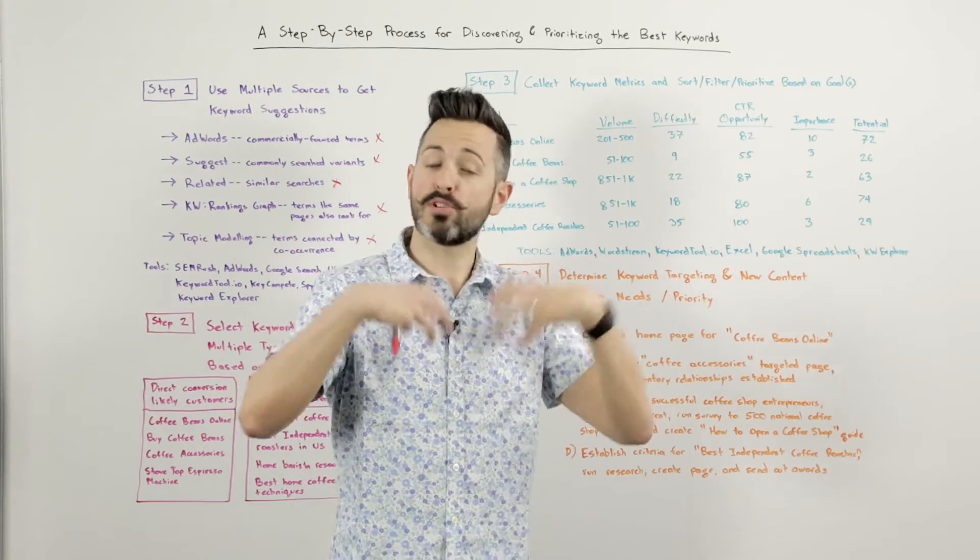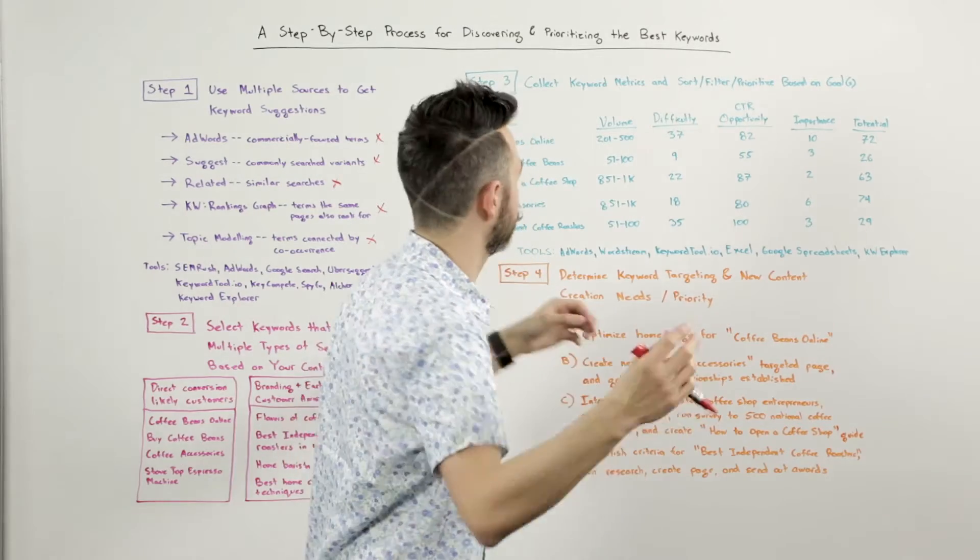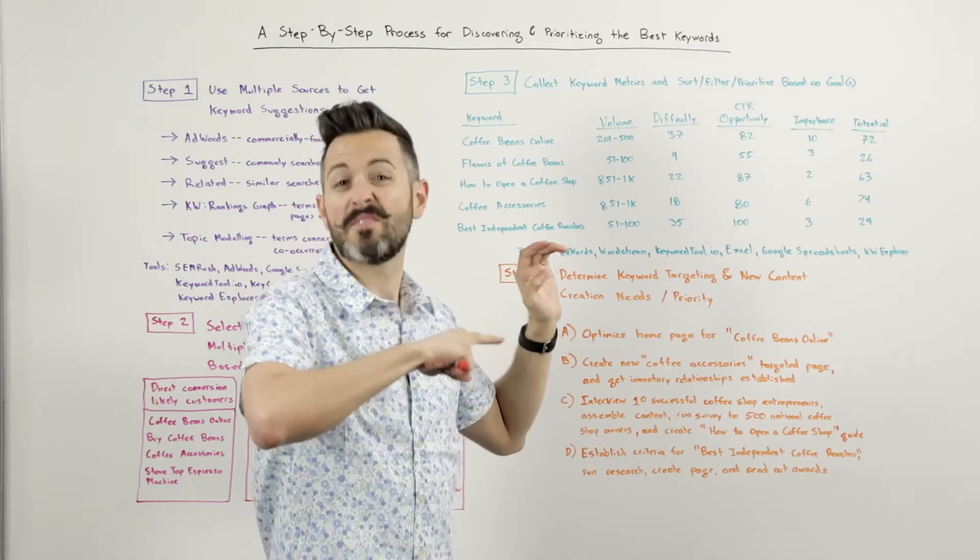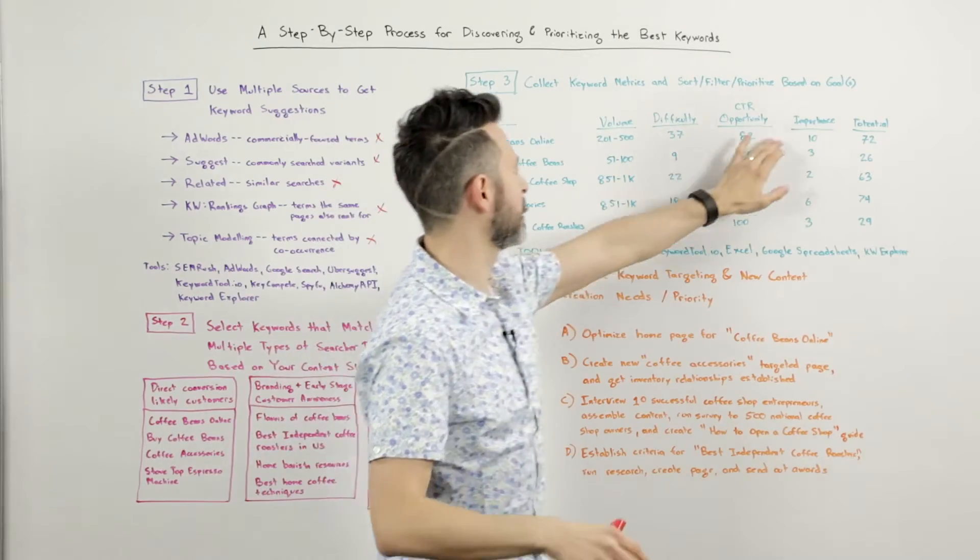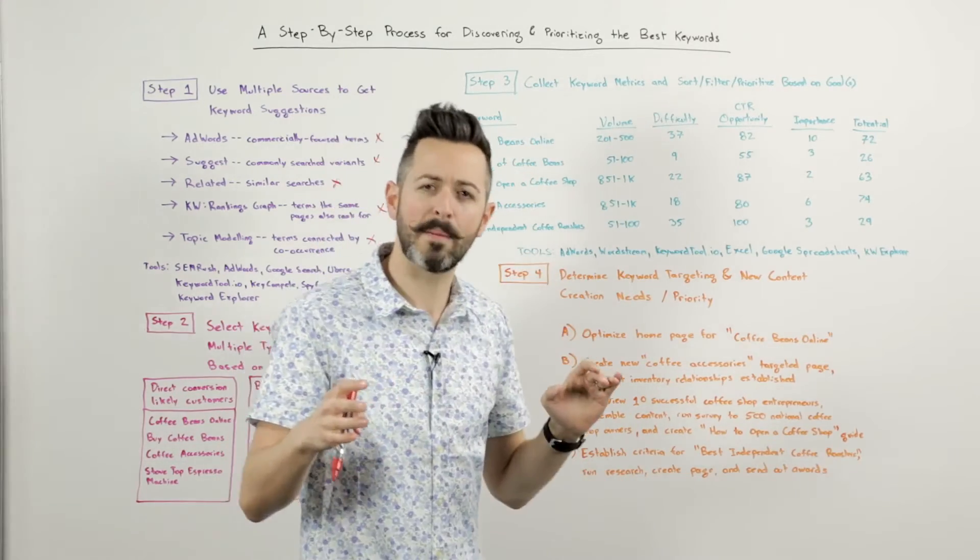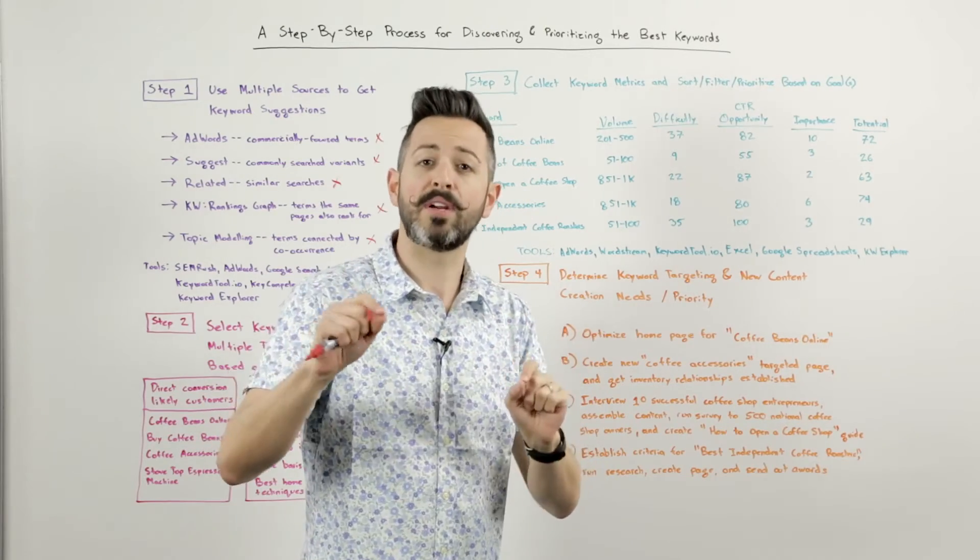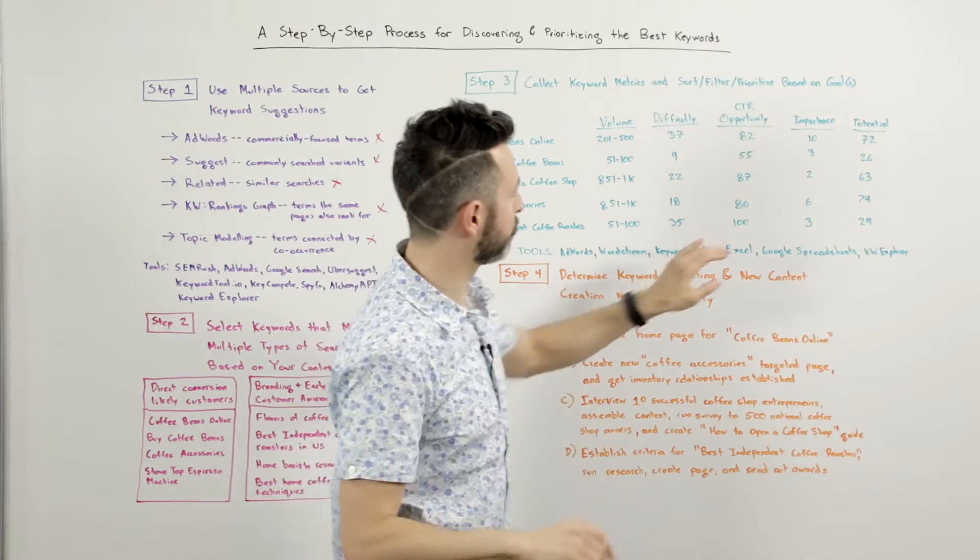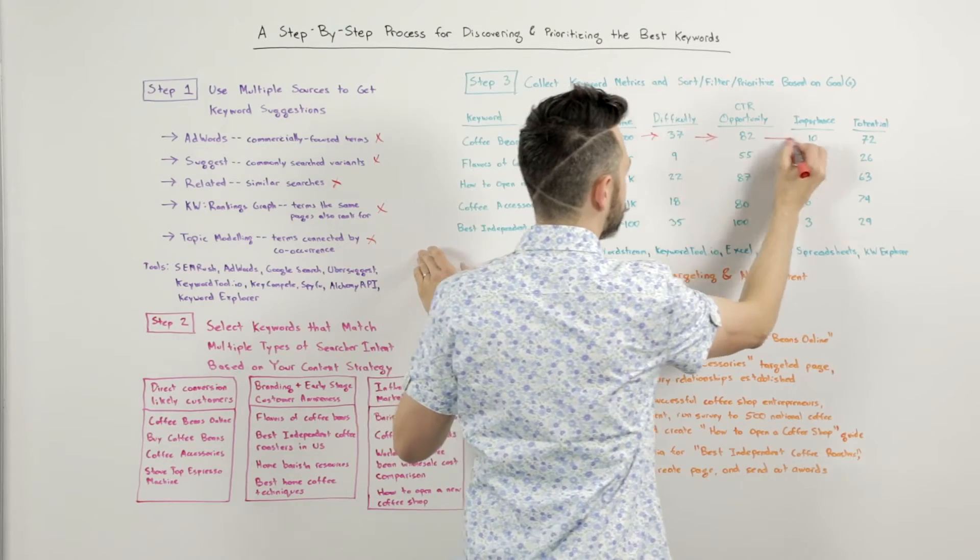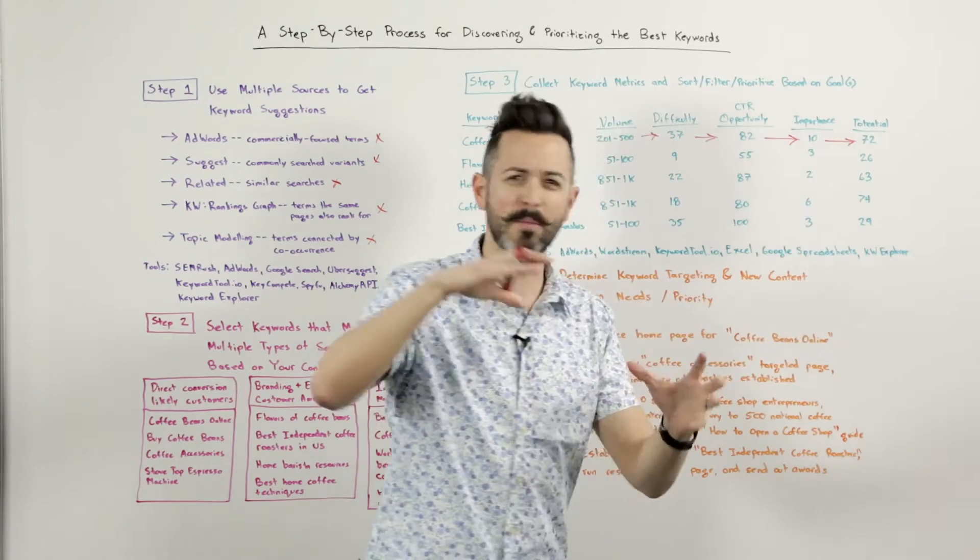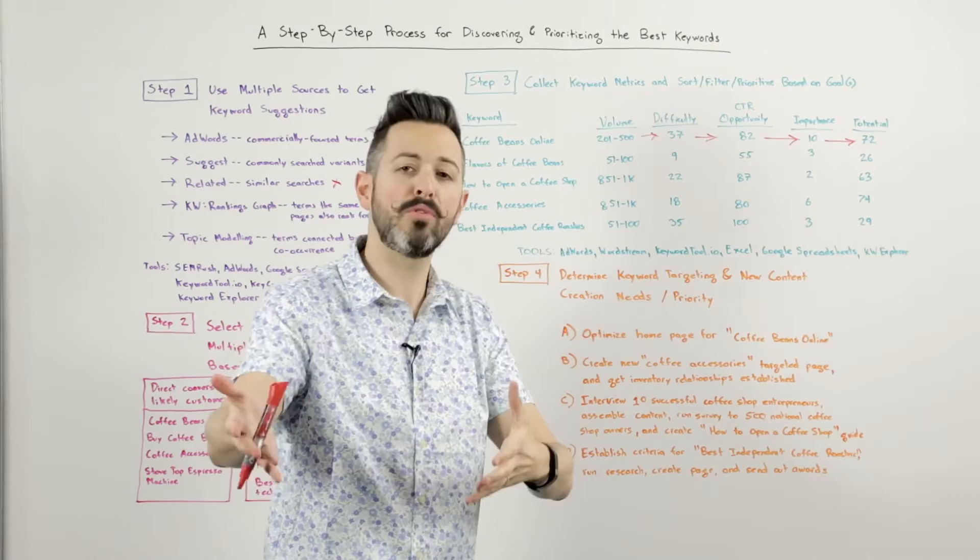Importance. This is essentially my personal priority. And it's something where it's not a metric that comes from anywhere else. I use it internally. Like I know, for example, that coffee beans online is a very important keyword because it directly relates to what I'm selling. It's the first thing I'm offering. So I'm going to put it at a 10 out of 10 versus maybe how to open a coffee shop, which, look, that's some content marketing that I might do in the future, but it's not a high priority right now for me from an important standpoint. And then all of these metrics, so it's kind of like this metric combined with this metric combined with this metric should give me some form of potential.